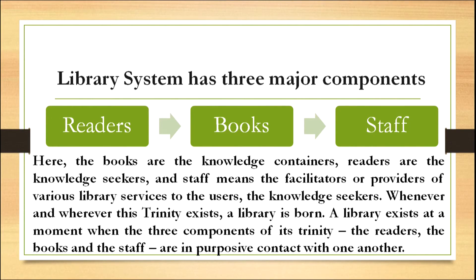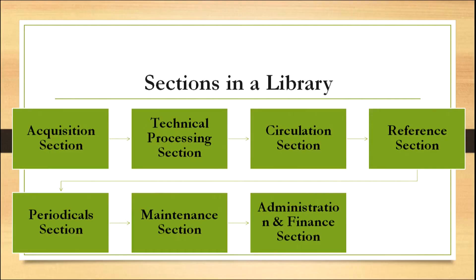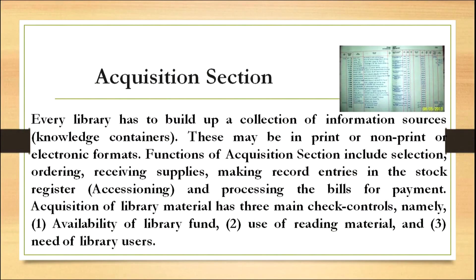A library has different sections: acquisition section, technical processing section, circulation section, reference section, periodical section, maintenance section, and administrative and finance section. We will now discuss each section one by one, starting with the acquisition section.